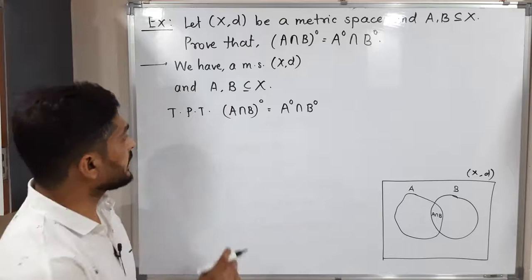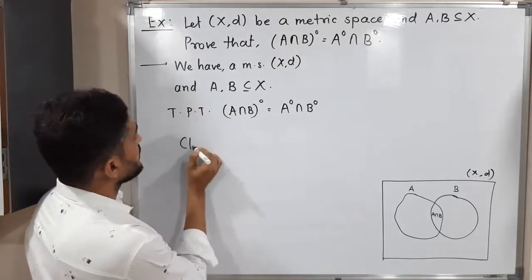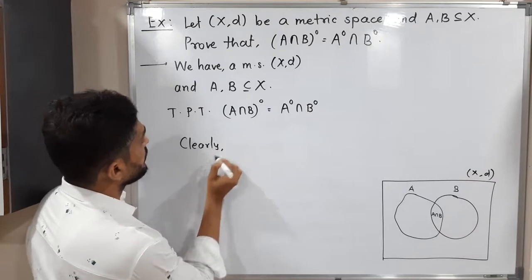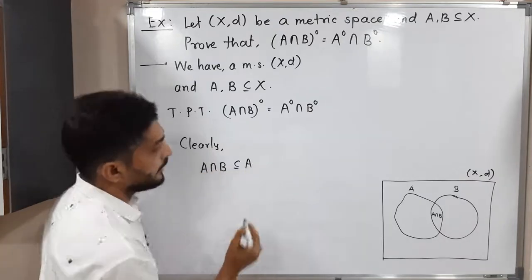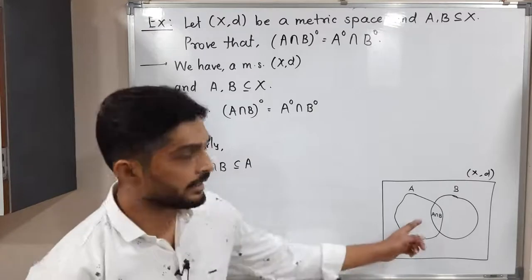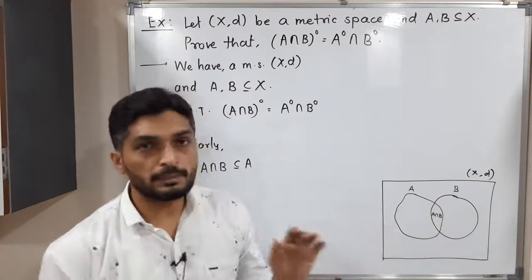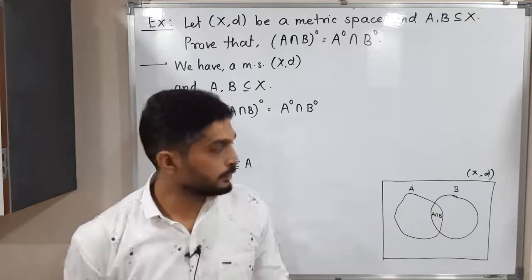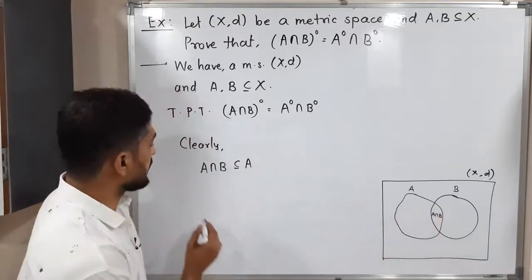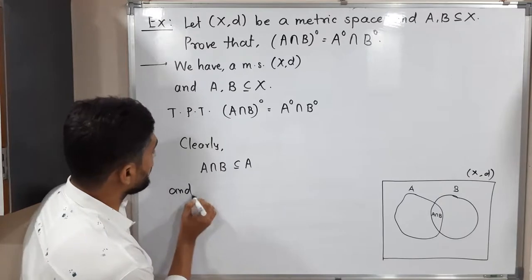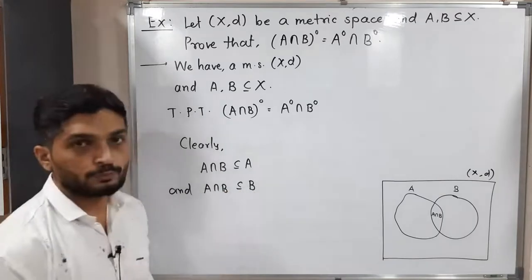Clearly, one thing we can write: A intersection B is a subset of A. In the diagram you can see this is A, this is B, and A intersection B is the part common to both — so obviously this part is a subset of A. Similarly, A intersection B is a subset of B also.